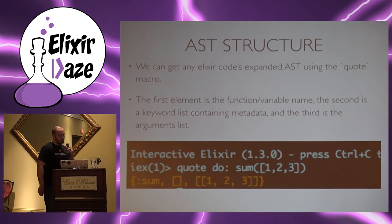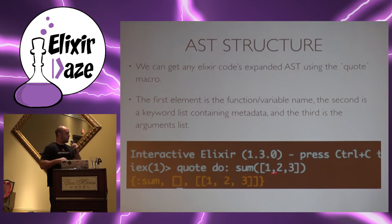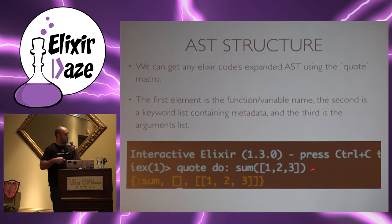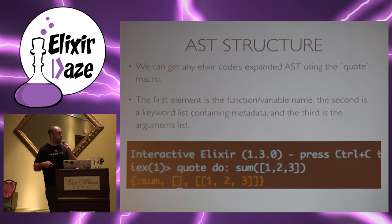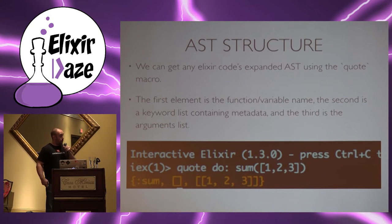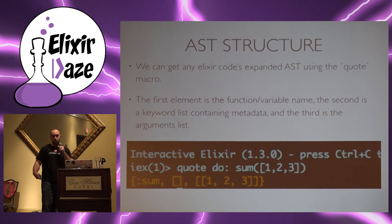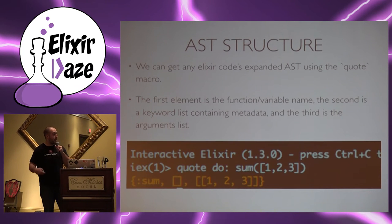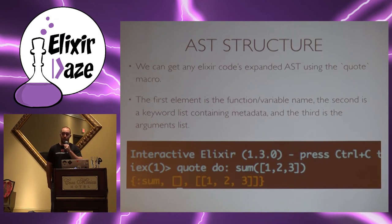Let's look at an AST. I have a REPL session open with a function called sum, which doesn't actually exist, taking a list of integers. We can get any valid Elixir AST representation by passing it into a quote block. What you get is a three-element tuple: the first element is the function name, variable name, or macro name; the second item is a list of metadata if applicable; and the third item is the arguments passed in from left to right.